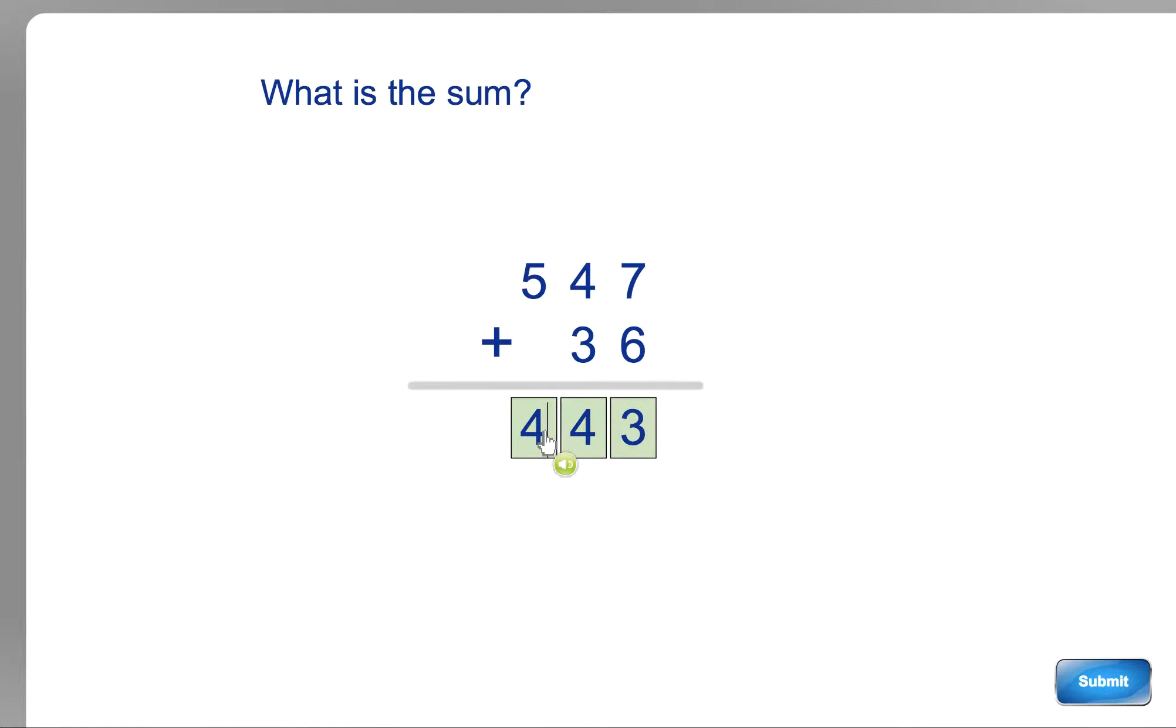Again, if it was bigger than 9, if it was say 14, you would put the 4 in there, and the 1 would go in that one there. But it's not bigger than 9, this one. This one is just 8. And then we add this column, and it's just 5. So the answer is 5, 8, 3. Let's do another couple.